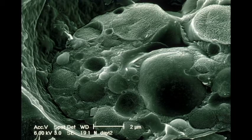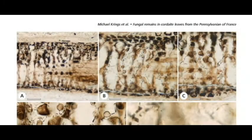Chytridiomycota, commonly known as chytrids, derived from the Greek word 'citridion,' meaning 'little pot,' describes the structures containing unreleased zoospores. They are the oldest fungal lineage, having fossils dating back to 350 million years ago, and are mainly aquatic, but can live in a diverse array of habitats.